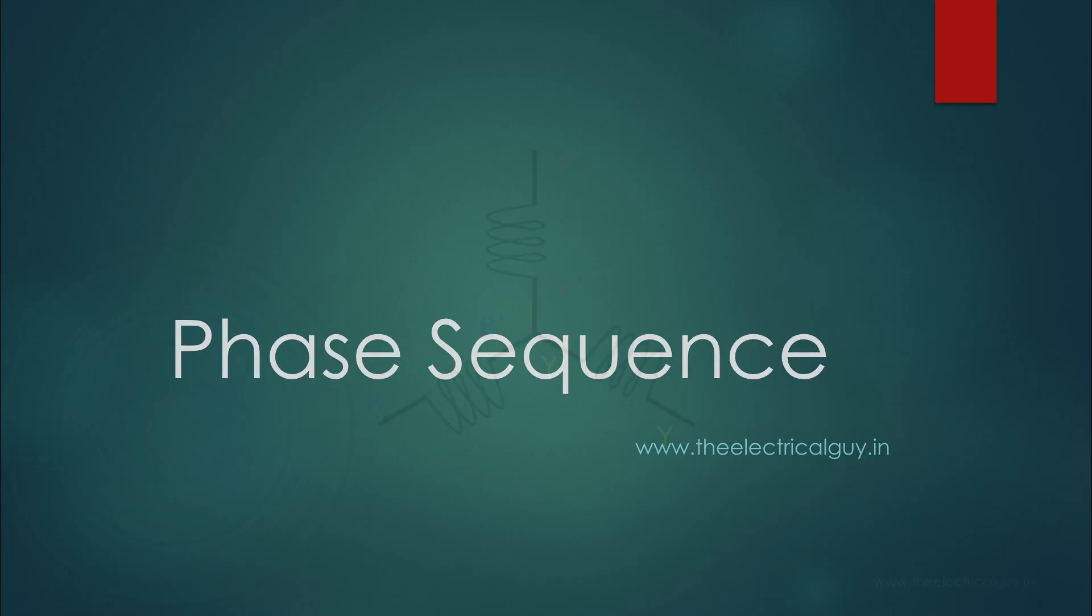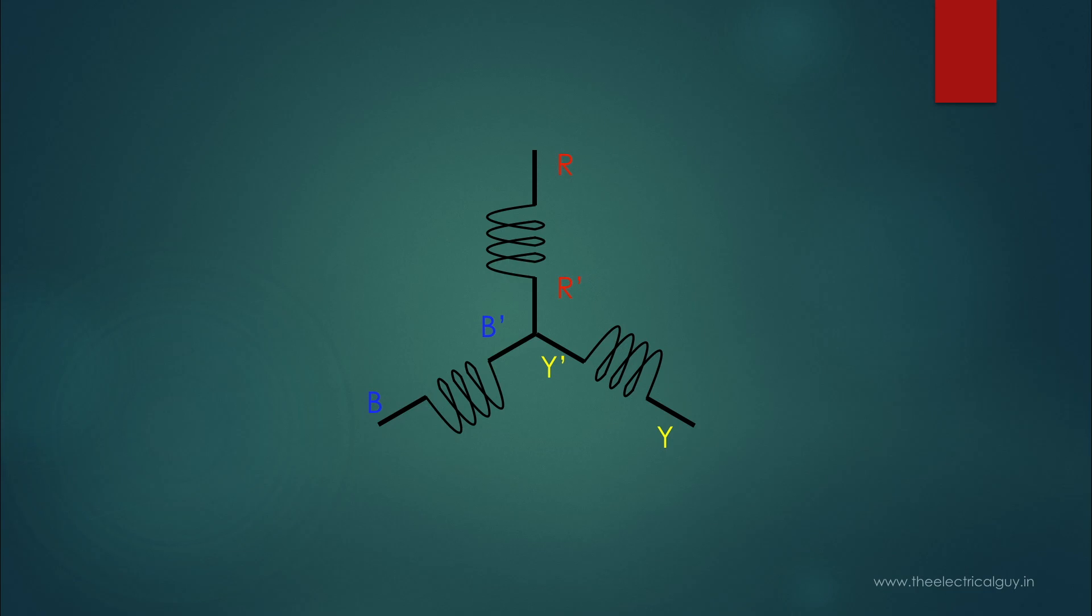The winding of a three-phase alternator as shown in this figure - we know that phase difference is 120 degrees in a three-phase system. Why 120 degrees? That's because the windings are placed 120 degrees apart from each other. So if you would like to have a phase difference of 90 degrees, just place the windings 90 degrees apart from each other. It's all about how you place the windings.